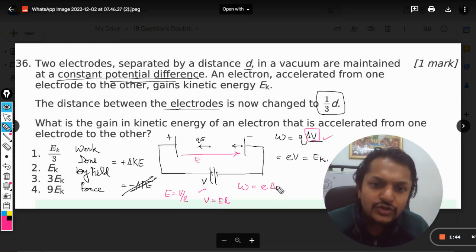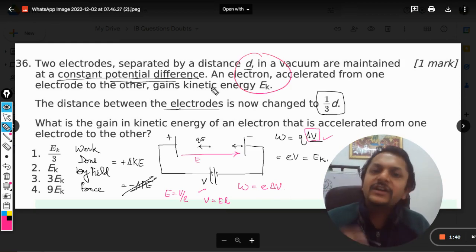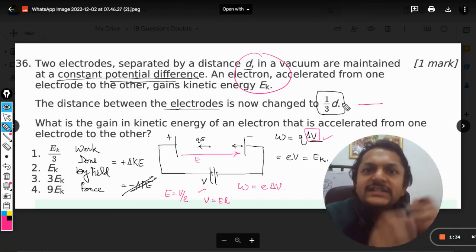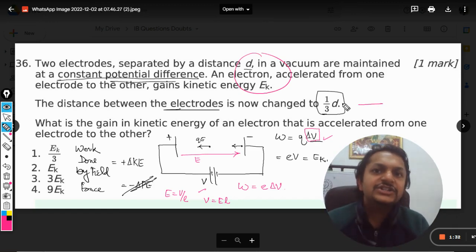So it means that here also the work done is the same. In the case one, work done is W, so in the case two also the work done is the same, that is W. So if the work done is same, the change in kinetic energy will be absolutely same.